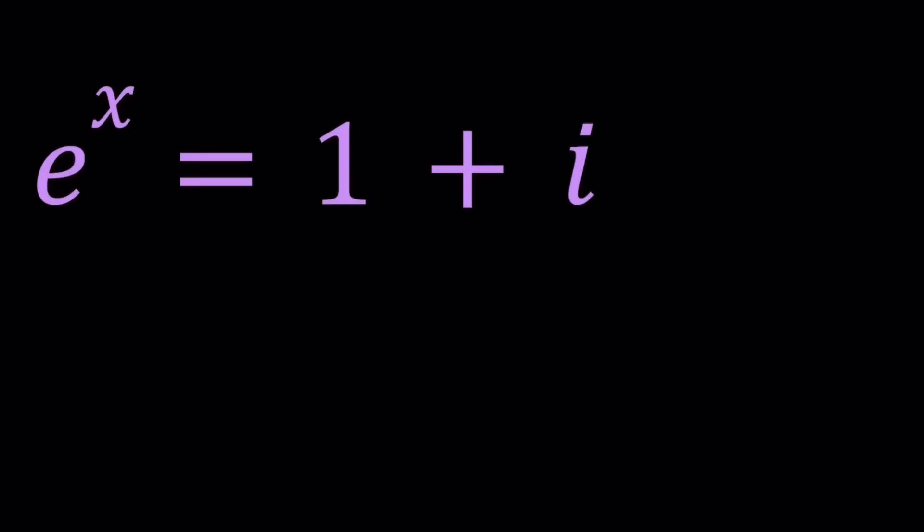We're going to write this complex number in polar form and then write it in exponential form. We'll do a little bit of trigonometry here and then solve our equation. Obviously we're not looking for real solutions because there aren't any. Let's go ahead and get started.